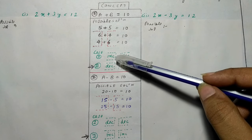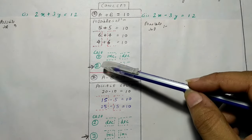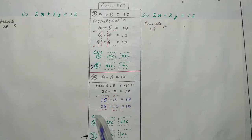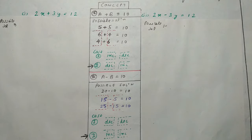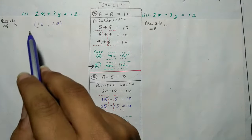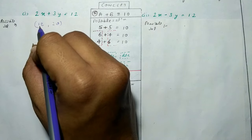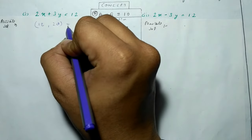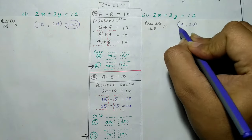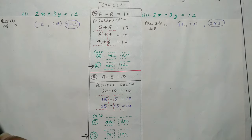Plus sign के case में: एक entity बढ़ाते थे तो दूसरी कम करनी पड़ती थी, एक कम करते थे तो दूसरी बढ़ानी पड़ती थी। अब यही phenomena equations में लगाएंगे। First equation: 2x + 3y = 12। यह one equation and two variable का case है, इसलिए infinitely many solutions होंगे।